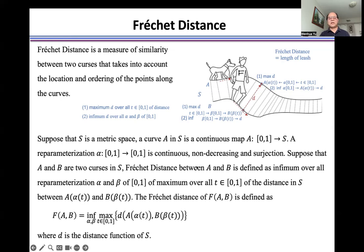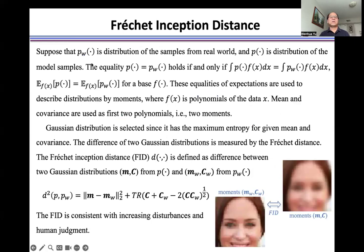Here we use Fréchet distance to measure the similarity between two images. Suppose that Pw is a distribution of the samples from real world, and p is a distribution from model samples.